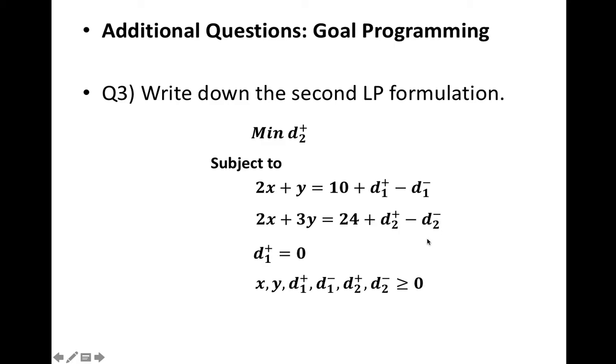In this constraint, you want to minimize d_2^+. And we add d_1^+ = 0, which we actually obtained from the previous LP. And since we add two more deviation variables, d_2^+, d_2^-, all your deviation variables have to be non-negative.